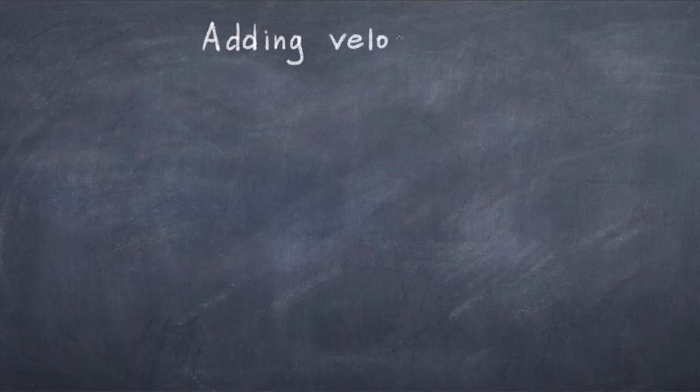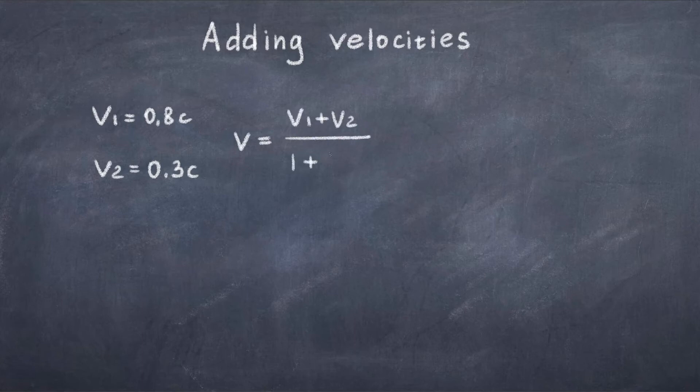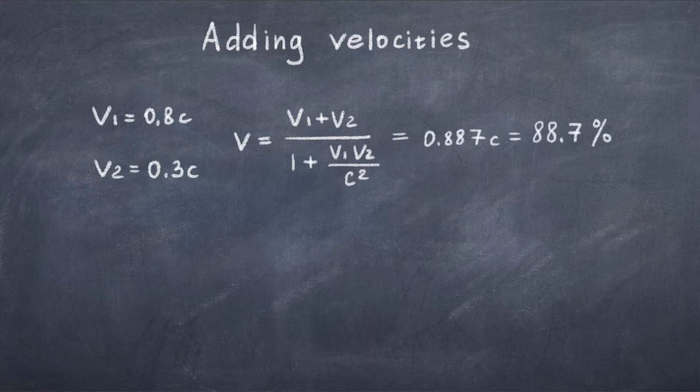Well it turns out that in the theory of relativity you can't just add velocities like in the Newtonian mechanics. Instead you must use the formula where v is the velocity, v1 is the velocity of the train, v2 is the velocity of the ball and c is the speed of light. If we plug in the numbers we get that the velocity is 88.7% the speed of light, thus it is not faster than the speed of light and everything works correctly.